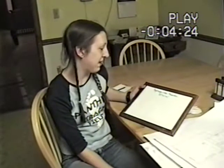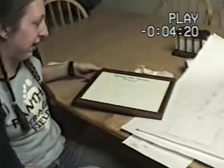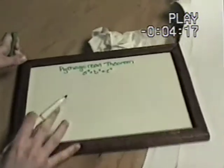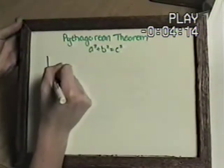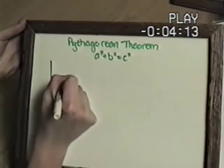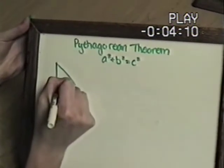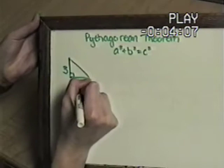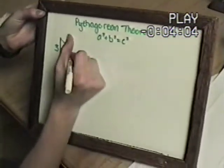My equation is the Pythagorean Theorem, which is a squared plus b squared equals c squared. An example of this is used in a triangle, a right triangle, and say the sides are 3 and 4.